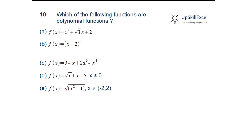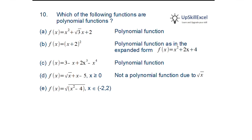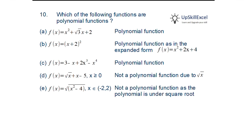Which of the following functions are polynomial functions? f(x) = x²+√3·x+2: x has powers 2 and 1, so this is a polynomial function. f(x) = (x+2)² can be expanded as x²+4x+4 with powers 2 and 1 — polynomial function. The third case is also a polynomial function. But the fourth case has √x, so it is not a polynomial function. The fifth case involves √(x²−4), which is also not a polynomial function.